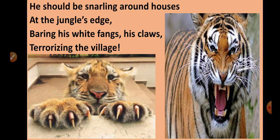Now the third stanza: 'He should be snarling around houses at the jungle's edge, bearing his white fangs, his claws, terrorizing the village.' The tiger should have been around the houses located at the outskirts of the jungle. Snarling means when an animal wants to scare someone or warn them, he shows his teeth — that is called snarling.